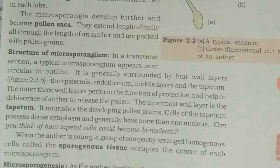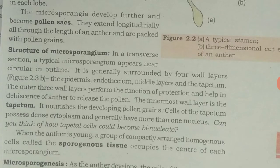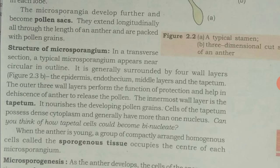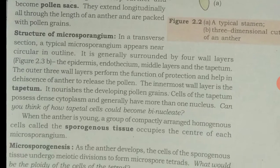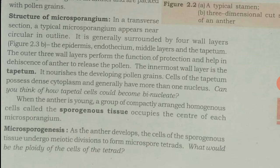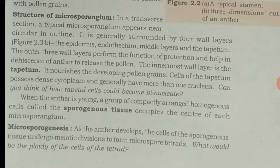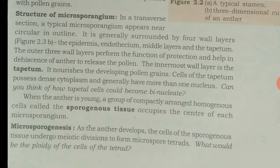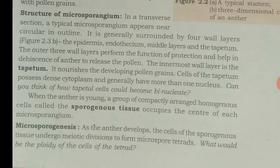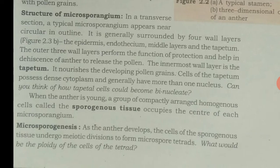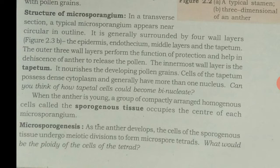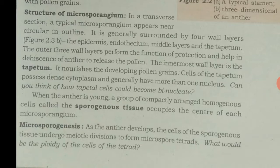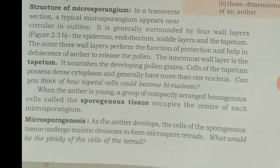In transverse section, a typical microsporangium appears nearly circular in outline. It is generally surrounded by four wall layers: epidermis, endothecium, middle layer, and tapetum. The outer three wall layers perform the function of protection and help in the dehiscence of the anther to release the pollen. The innermost wall layer is the tapetum.